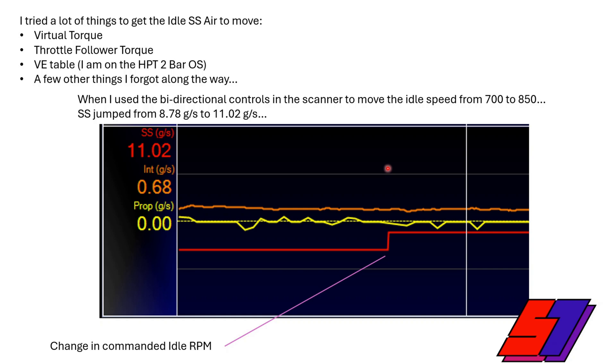So then the question is, well how do we change this steady state airflow aside from shifting from park into gear or whatever? So there's a bunch of things, a lot of tests - I'm not going to walk you through all the tune files and log files. But virtual torque, I had my hopes pinned on virtual torque. And then I tried throttle follower torque, I tried updating the VE table. I finally gave up the mass airflow sensor - it's physically removed with an IAT in its place and I'm just on the two bar OS. And a few other things I can't remember.